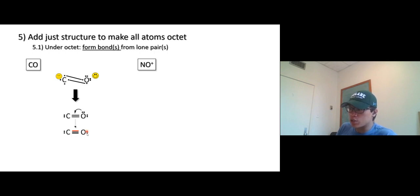Start with oxygen, one, two, three, four, five, six, seven, eight. This is eight electrons for oxygen, so oxygen is octet. Carbon, one, two, three, four, five, six, seven, eight. Carbon is also octet.